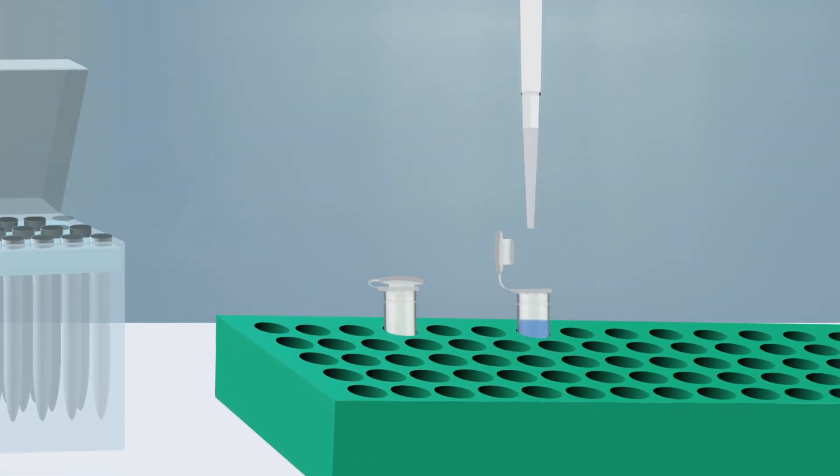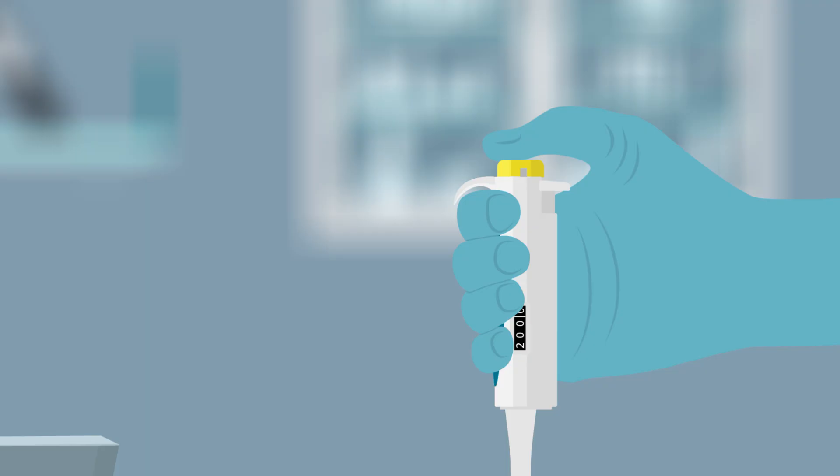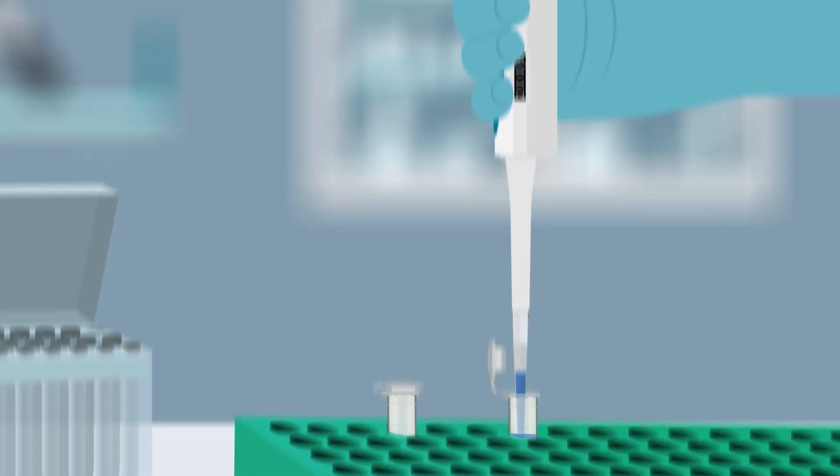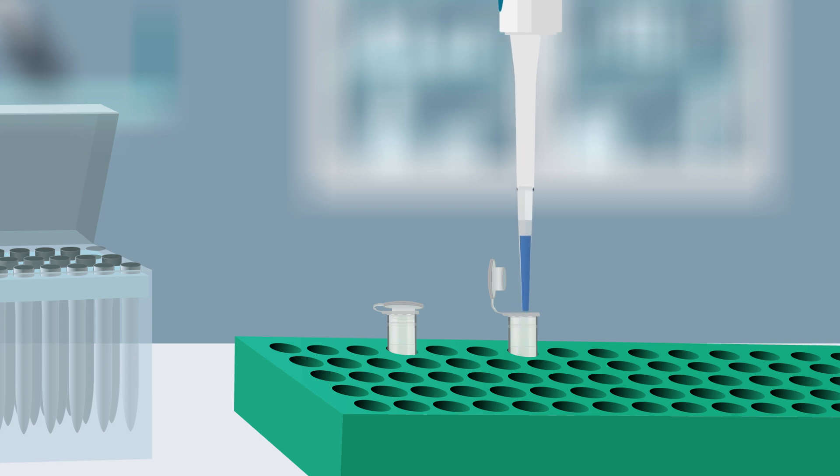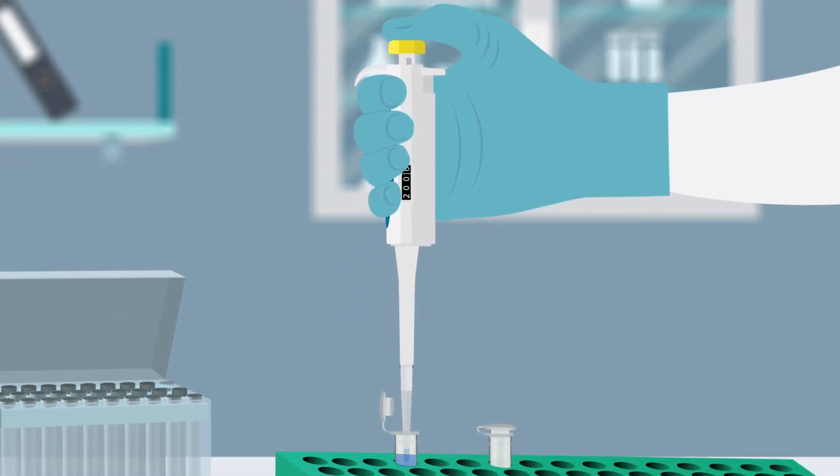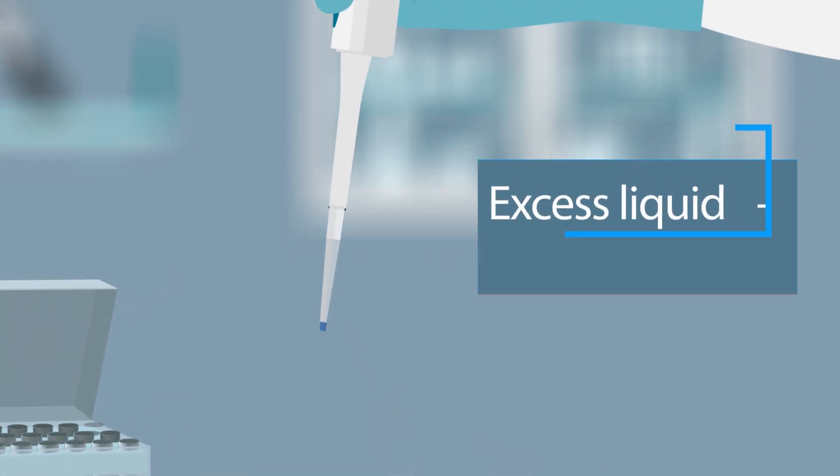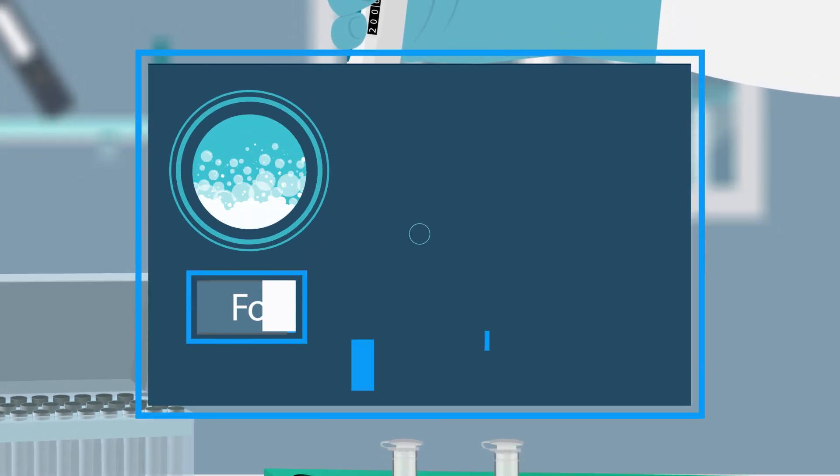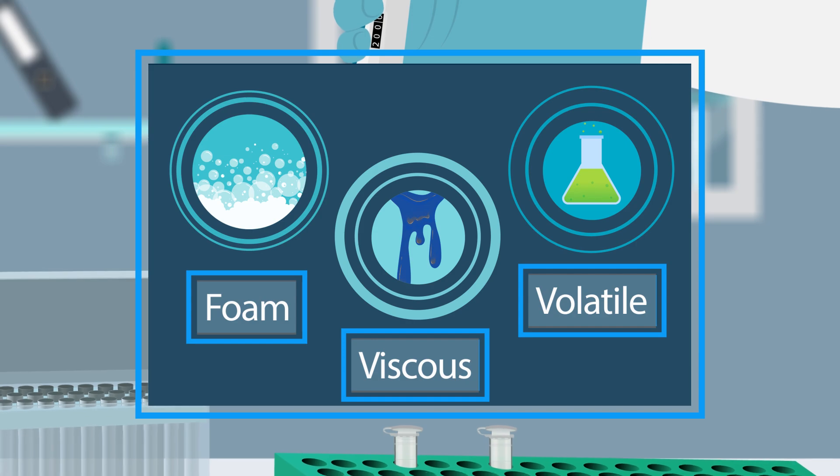On the other hand, reverse pipetting is when you immerse the micropipet tip into the liquid with the plunger depressed to the second stop. This allows for an excess volume to enter the micropipet tip. Unlike forward pipetting, the operator does not perform the blowout step. The excess liquid is discarded with the tip. The error is captured in the excess volume rather than shorting the volume transferred. This is useful for pipetting liquids that foam, are viscous, or are volatile.